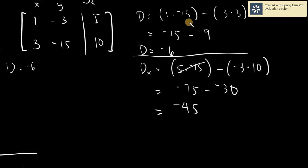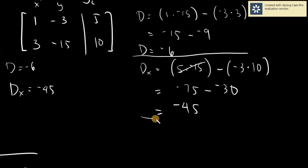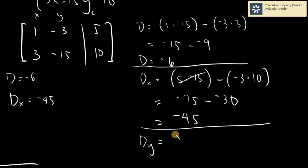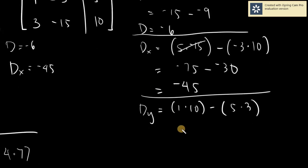D sub x is negative 45. For D sub y, cover y, and we will have 1 times 10 minus 5 times 3. That gives 10 minus 15, which is negative 5. So D sub y is equal to negative 5.